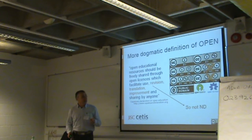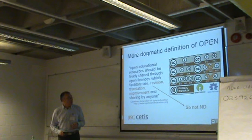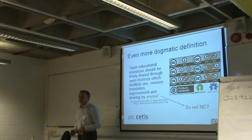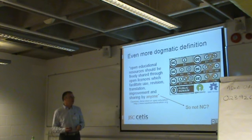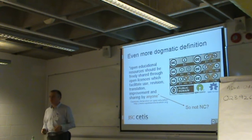Looking at the Cape Town declaration in a little bit more detail, it says that you've essentially got to be able to make derivatives of the resources. So the Creative Commons no-derivative licenses aren't so good for open educational resources. Getting a bit more dogmatic, the term 'anyone' means people who work in commercial organizations who want to use these for commercial uses — so maybe the non-commercial restriction on Creative Commons licenses is too restrictive for a truly open resource.